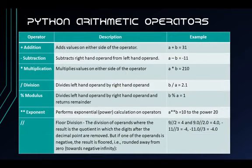First are the Python arithmetic operators, which include 7 operators. The first is the addition operator, which adds values on either side of the operator. The subtraction operator subtracts the right-hand operand from the left-hand operand. The multiplication operator multiplies the values on either side of the operator. The division operator divides the left-hand operand by the right-hand operand.